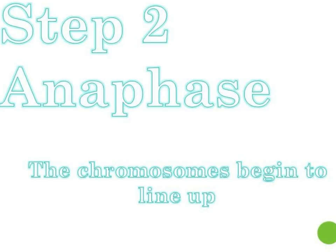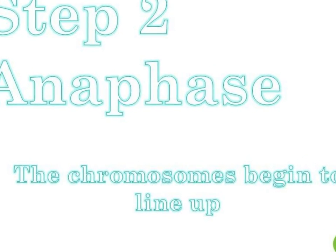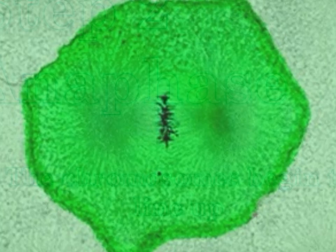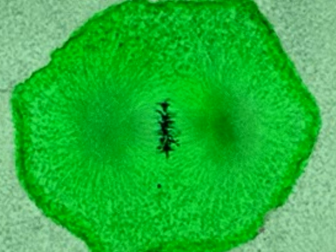Chromosomes line up across the center of the cell. Microtubules connect the centromere of each chromosome to the two poles of the spindle.